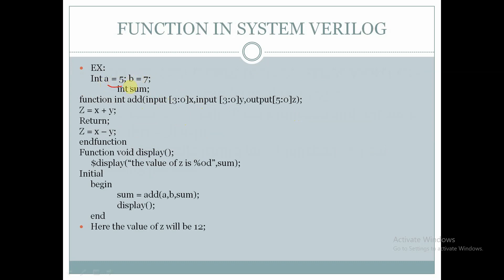Here we have declared two variables a and b of int data type and assigned values 5 and 7 respectively. We have declared another variable int sum. We declare a function of return type int with function name 'add', where x is input type, y is input type, and z is output type. z = x + y. Here we are using the return keyword, and after that z = x - y, and we display the value of sum.